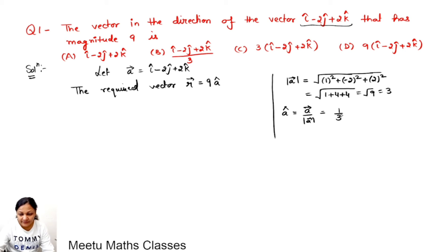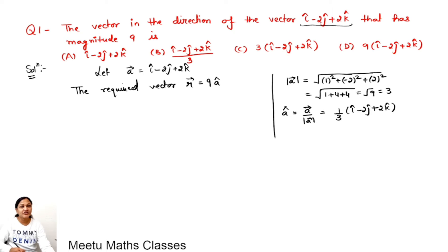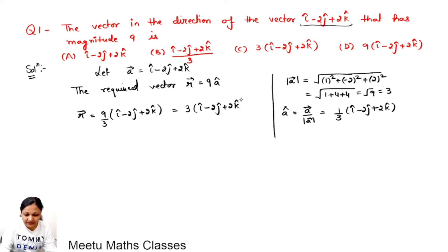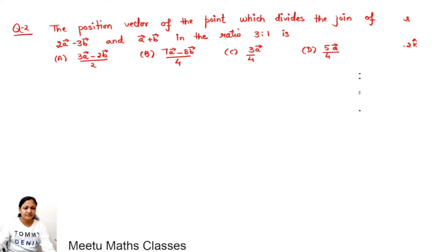The direction vector of a is the vector divided by its magnitude, that is (1/3)(i minus 2j plus 2k). This is the direction vector of a. Now the required vector r becomes 9 times (1/3)(i minus 2j plus 2k), so the required vector is 3(i minus 2j plus 2k), and option C is correct.